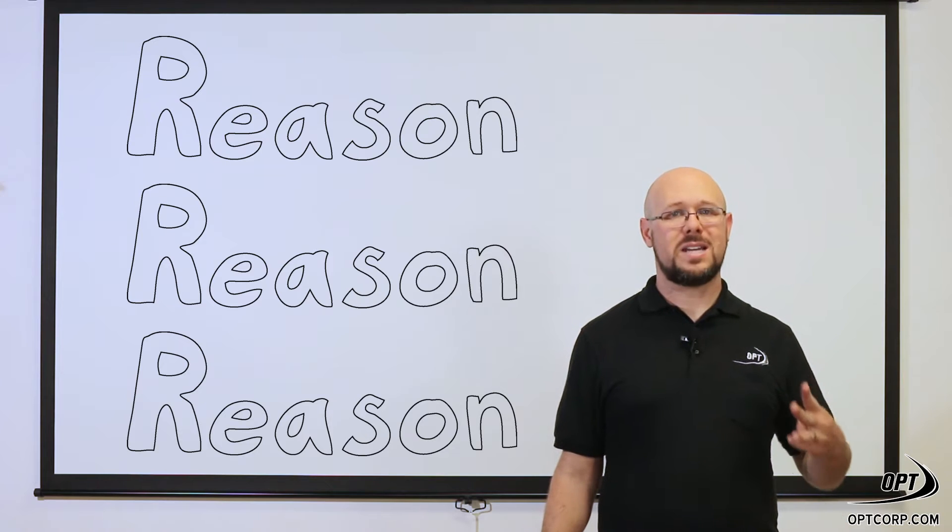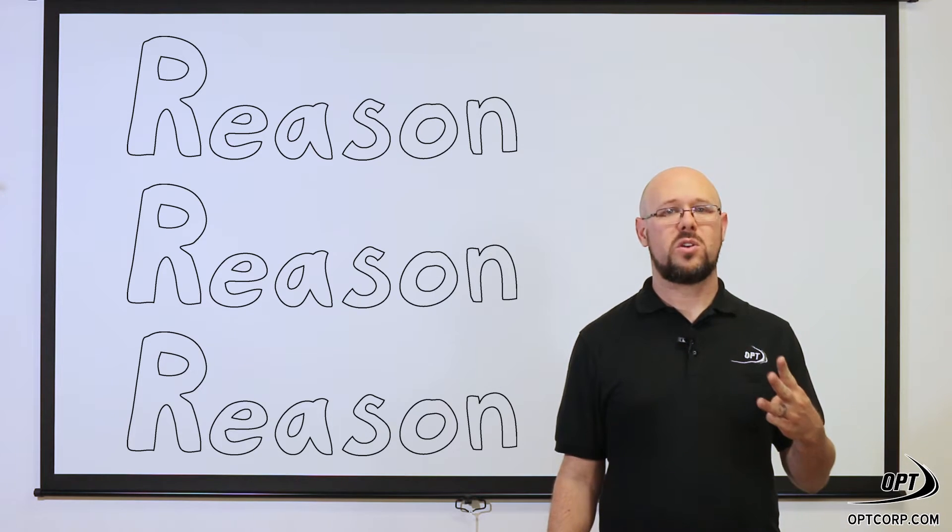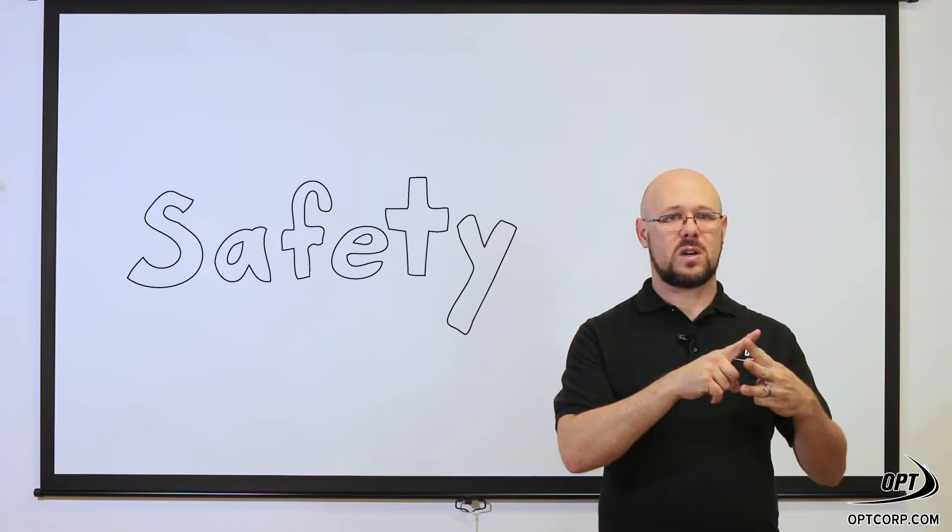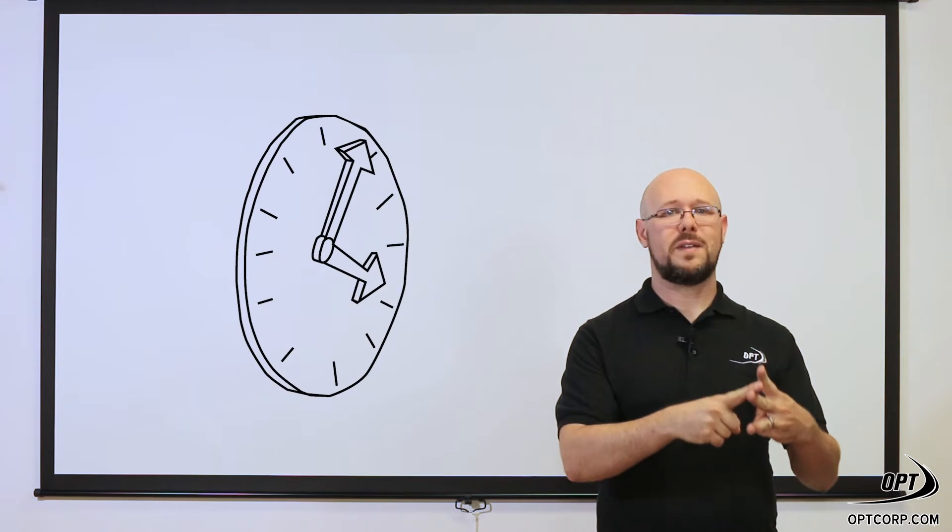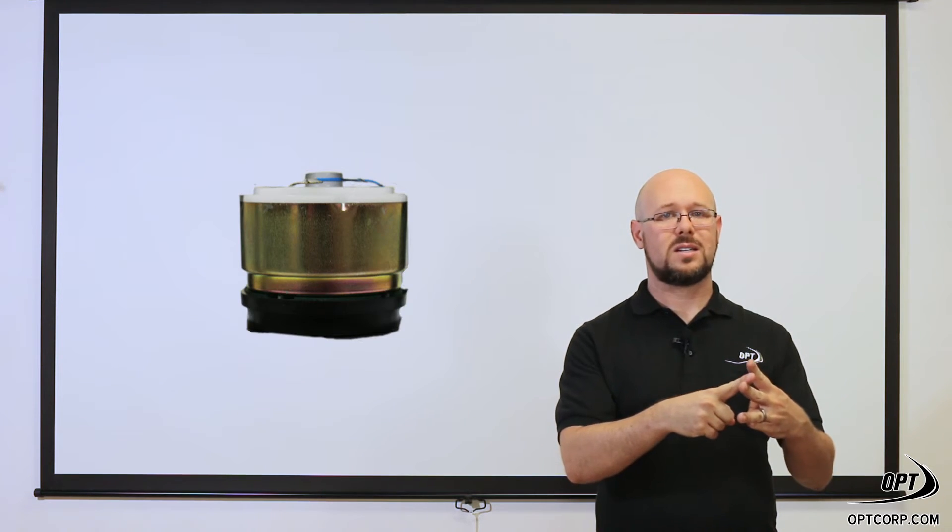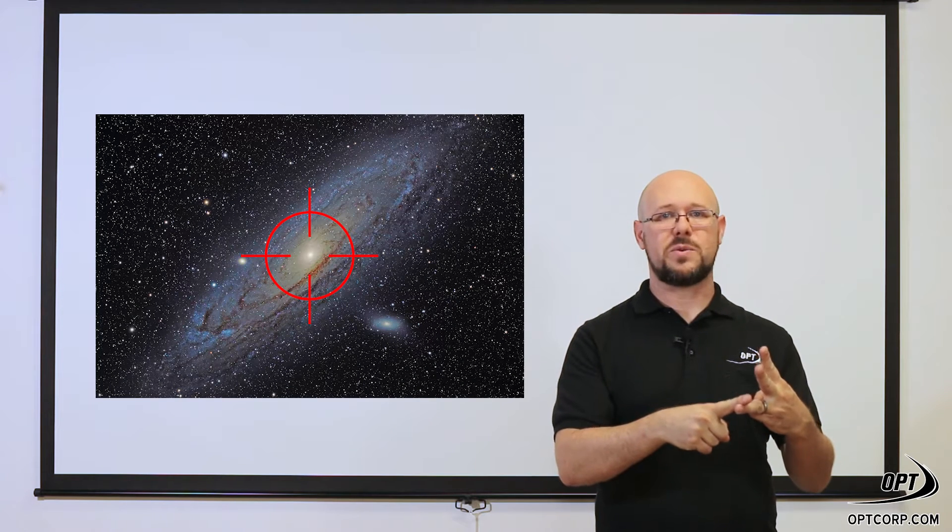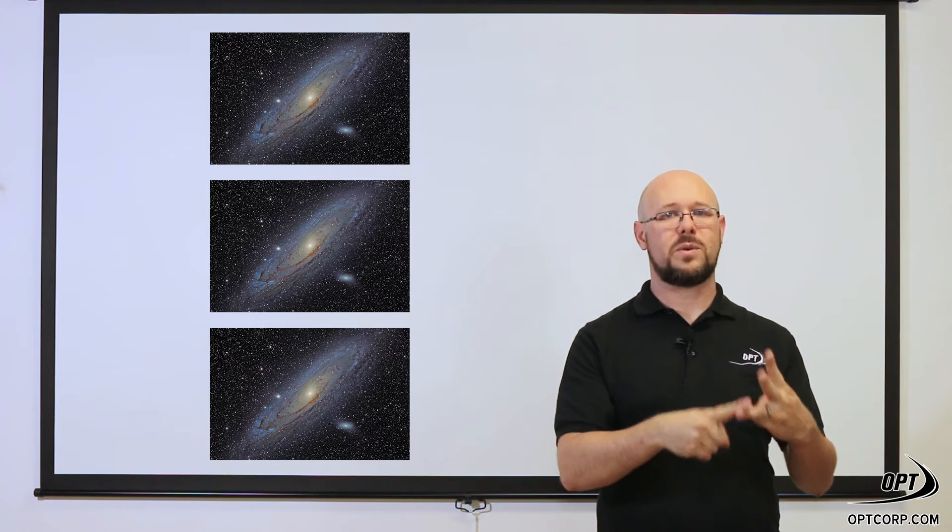There are three main reasons why you want to balance your equatorial mount: safety of your equipment, your telescope and your camera; the longevity of the motors in your mount; and the tracking accuracy which affects every picture you take with that mount.